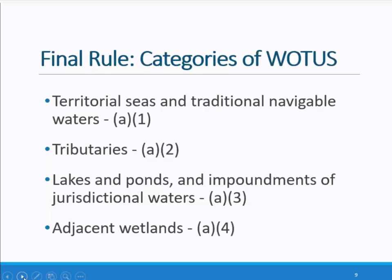The agency's final rule codifies four categories of jurisdictional waters in both EPA's and the Army Corps of Engineers regulations: the Territorial Seas and Traditional Navigable Waters, referred to as A-1 waters; tributaries of these waters, referred to as A-2 waters; lakes and ponds and impoundments of jurisdictional waters, referred to as A-3 waters; and finally, adjacent wetlands, referred to as A-4 waters. Waters and features not meeting the conditions of one of these categories are not waters of the United States.